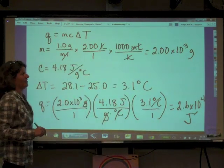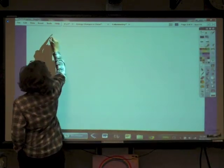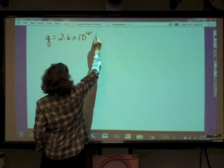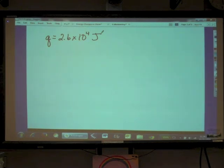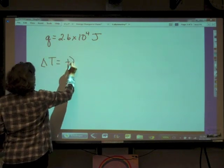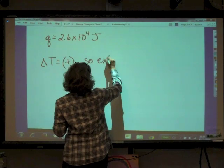That's not delta H yet. Q equals 2.6 times 10 to the fourth joules. Keeping in mind that Q is the absolute value of delta H, we have to look at the temperature. What happened? Did it go up or down? It started at 25 and ended at 28.1, so delta T is positive. The temperature went up, so this reaction is exothermic.